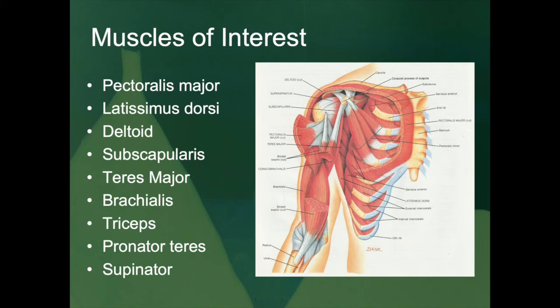A supinator muscle turns the palm upward or anteriorly — moving it toward the anterior surface of the body when standing in correct anatomical position. These terms relate to some of the movements associated with the elbow joint. The elbow joint is an area of junction — a connection between the upper and lower portions of the forelimb. Basically it is a hinge joint, though there is also a small amount of rotation asked of the forearm.